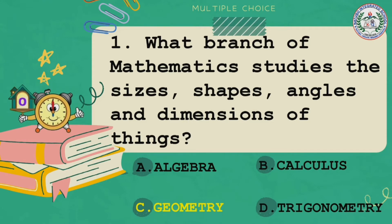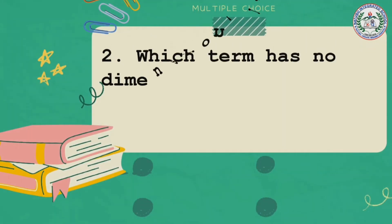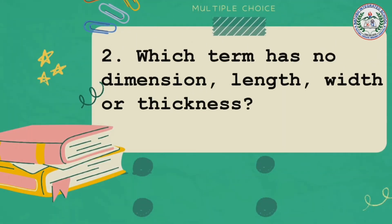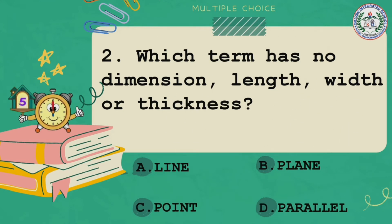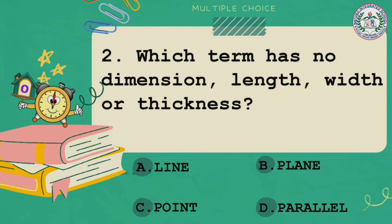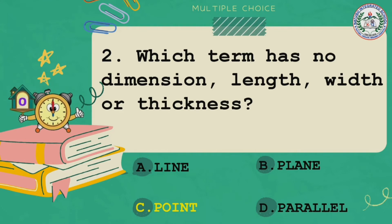And the answer is geometry. Number two, which term has no dimension, length, width, or thickness? Is it A line, B plane, C point, or D parallel? Your timer starts now.